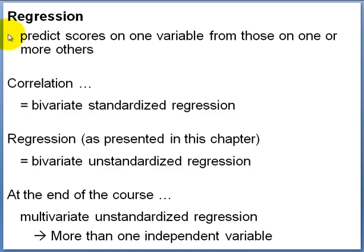As mentioned earlier, regression involves predicting scores on one variable from those on one or more others. One can think of correlation as bivariate standardized regression — bivariate because there are two variables, one independent and one dependent, and standardized because we're dealing with z-scores. Regression as presented now is more fully termed bivariate unstandardized regression, looking at the relationship between two variables with values expressed as raw scores.